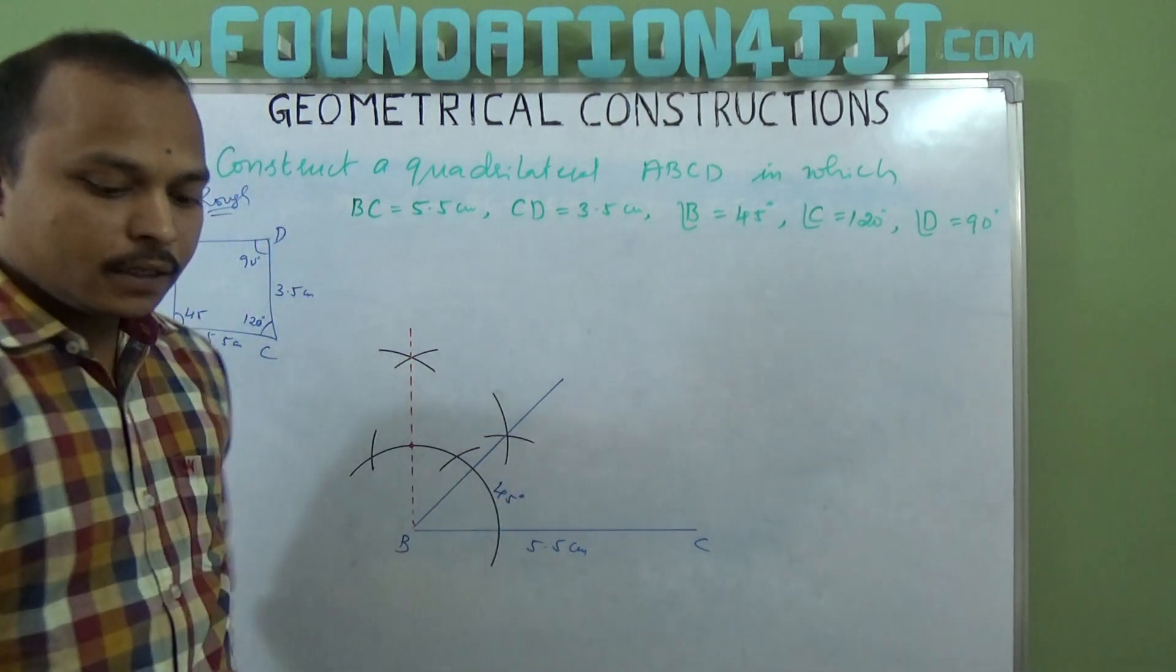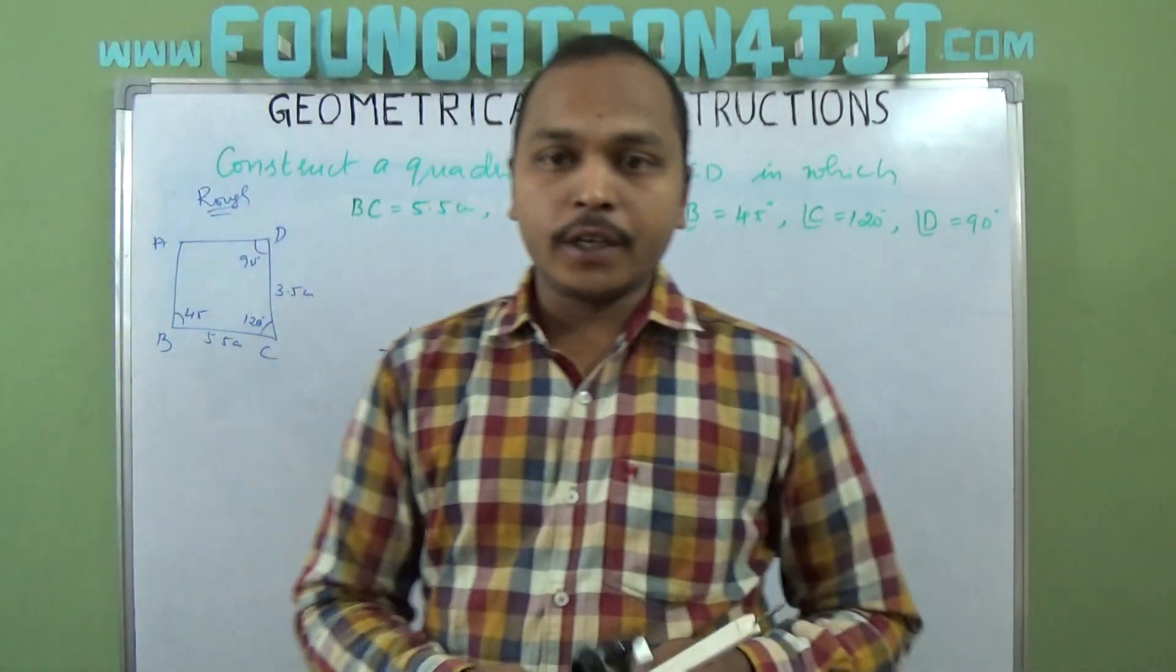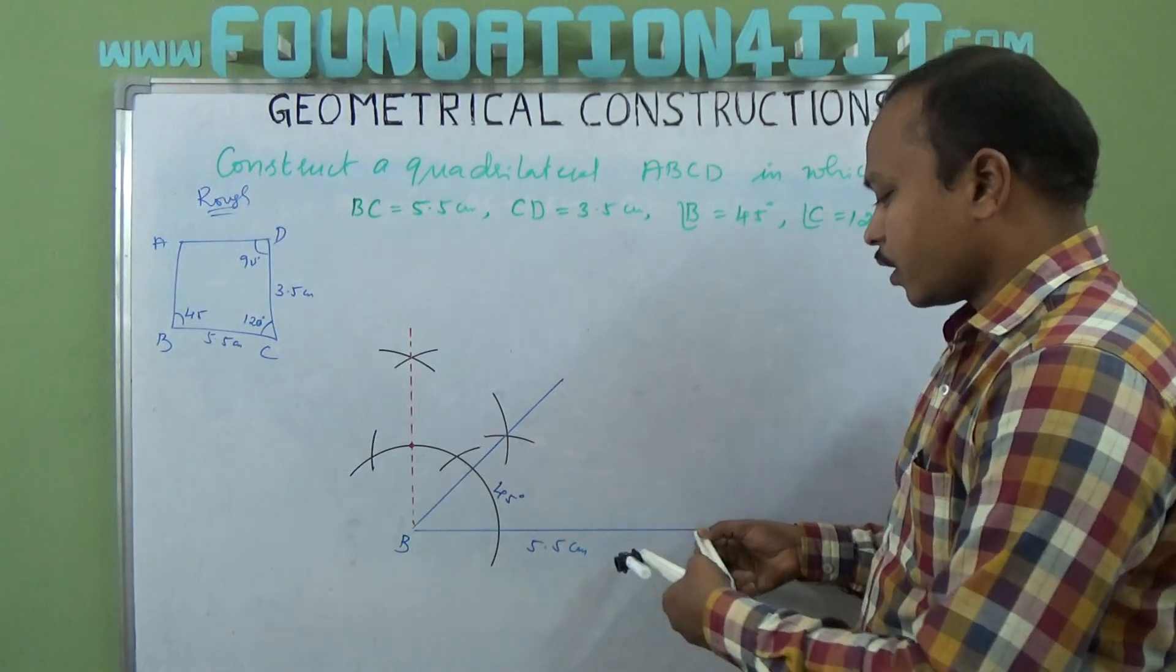So angle B is 45 degrees. Now angle C, angle C is 120 degrees given. Now you can take 120 is easy. Just draw an arc.